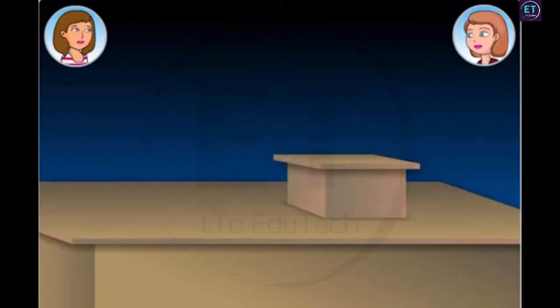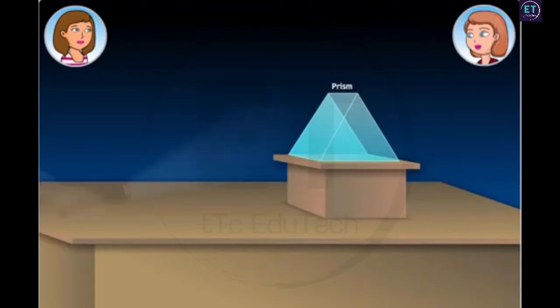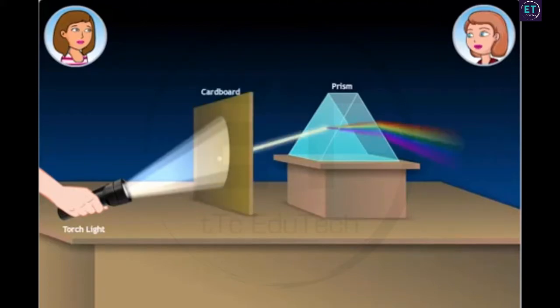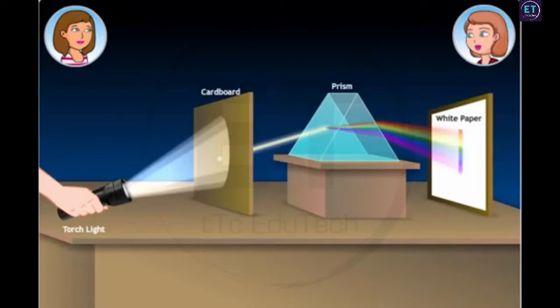For this experiment, we take a prism on a horizontal surface as shown. On one side of the prism, we place a source of white light. Between the light source and the prism, we place a cardboard having a pinhole. This helps in producing a very narrow light beam through it, similar to that of a ray. Finally, on the other side of the prism, we place a white paper as shown to catch the dispersed emergent beams. This white paper acts as a screen. Can you see that strip of colors?